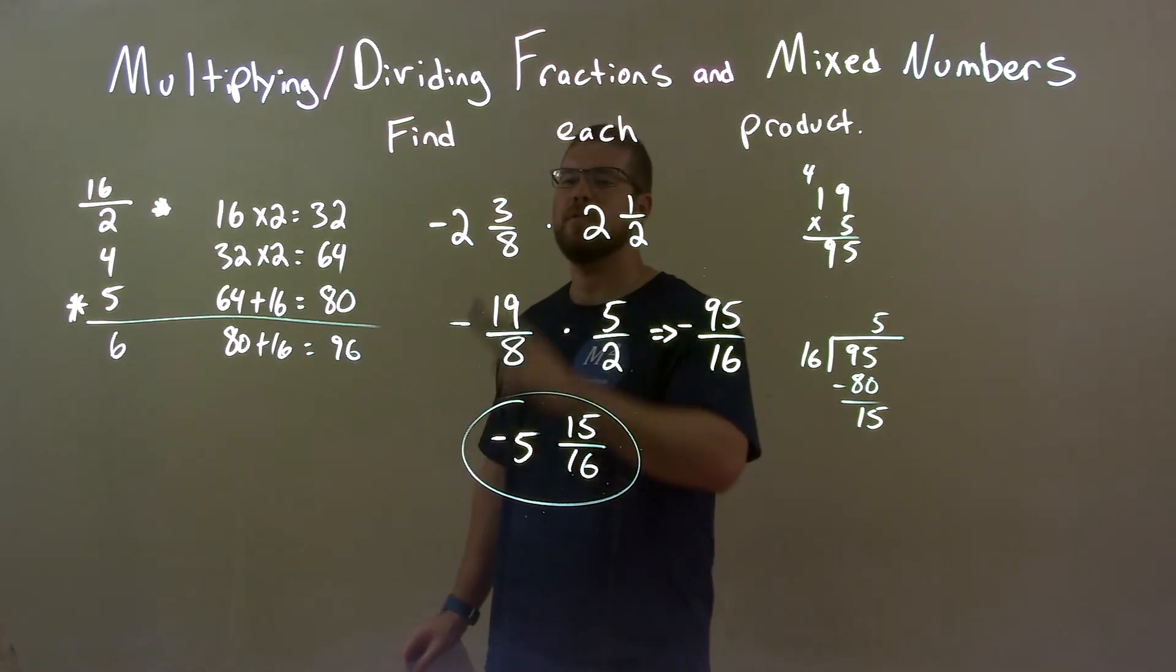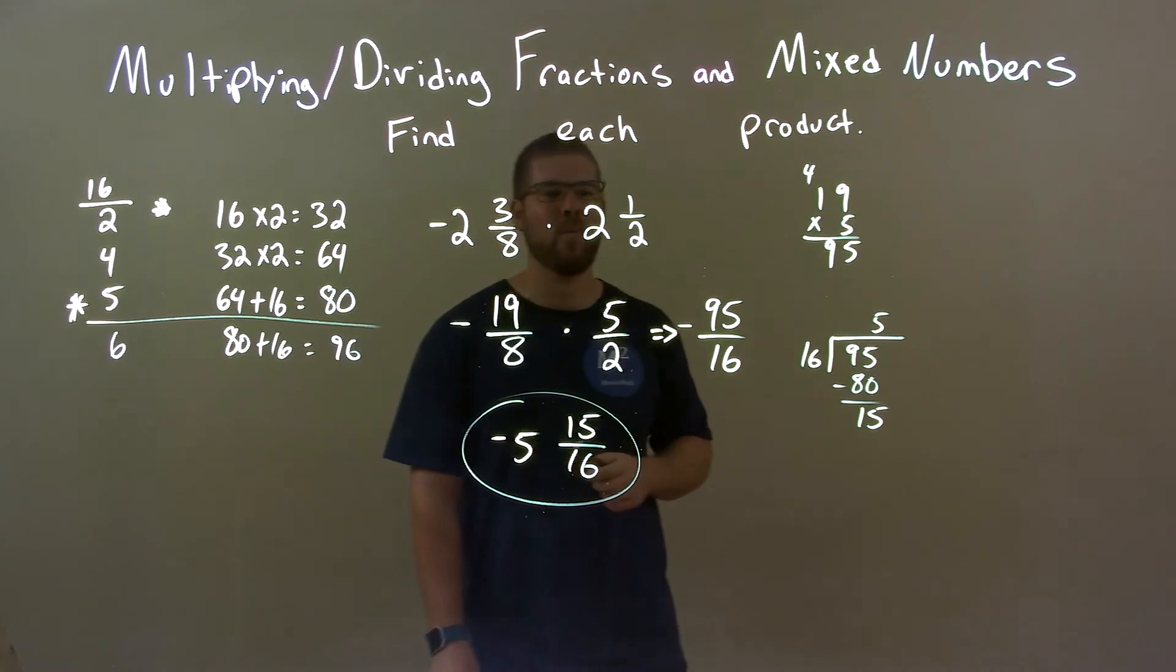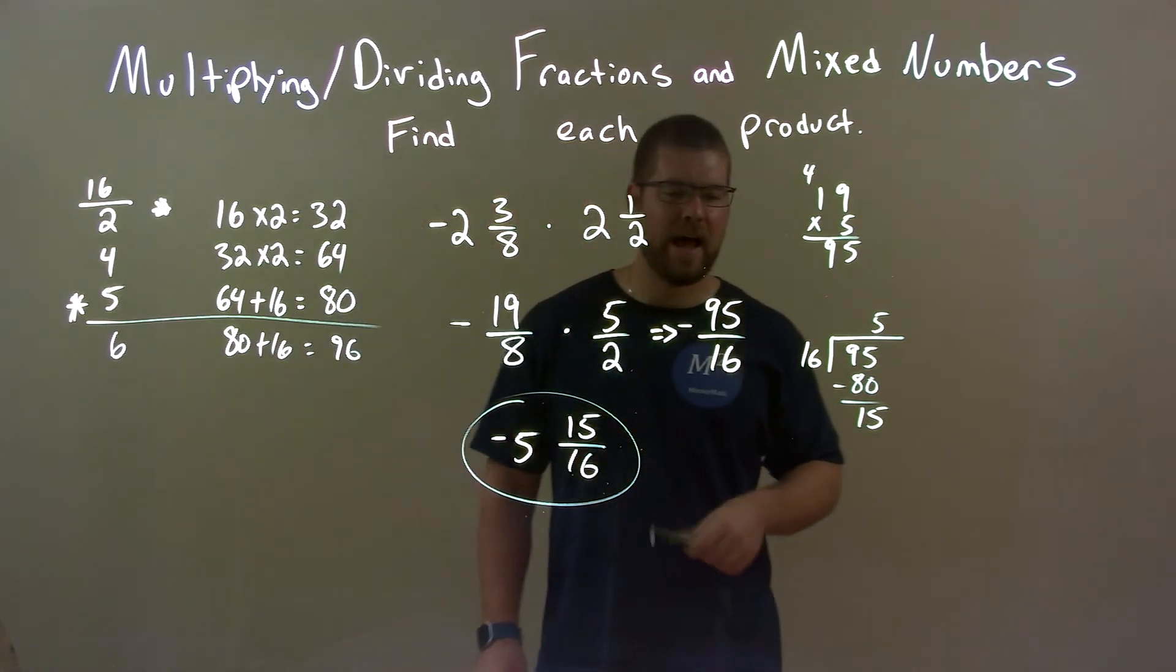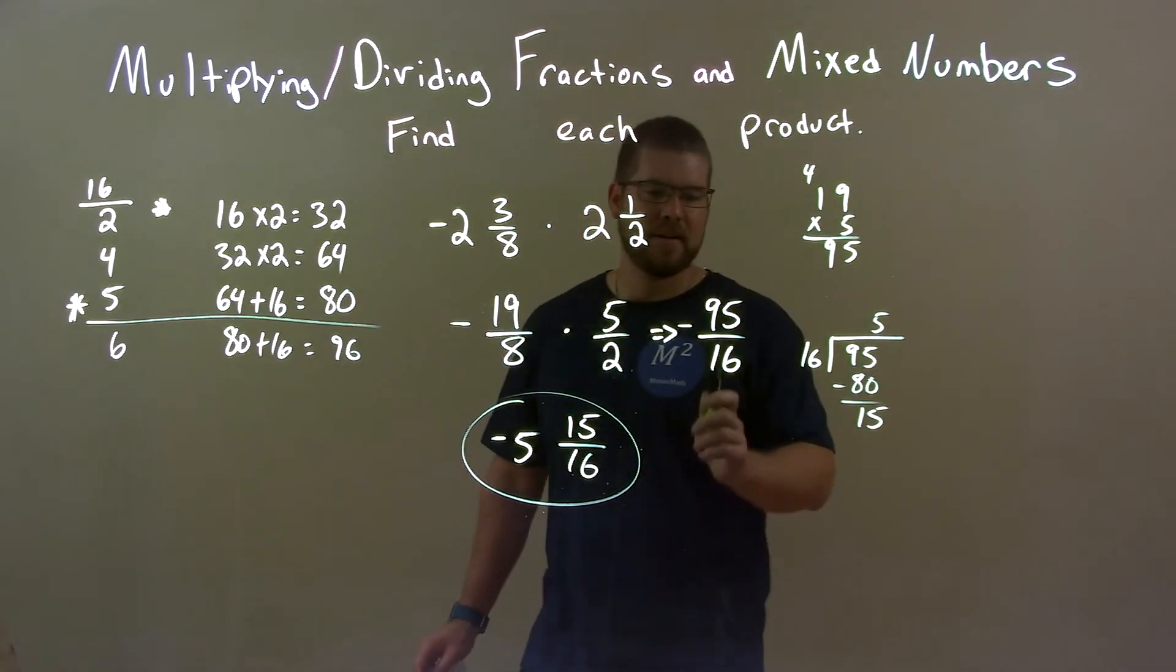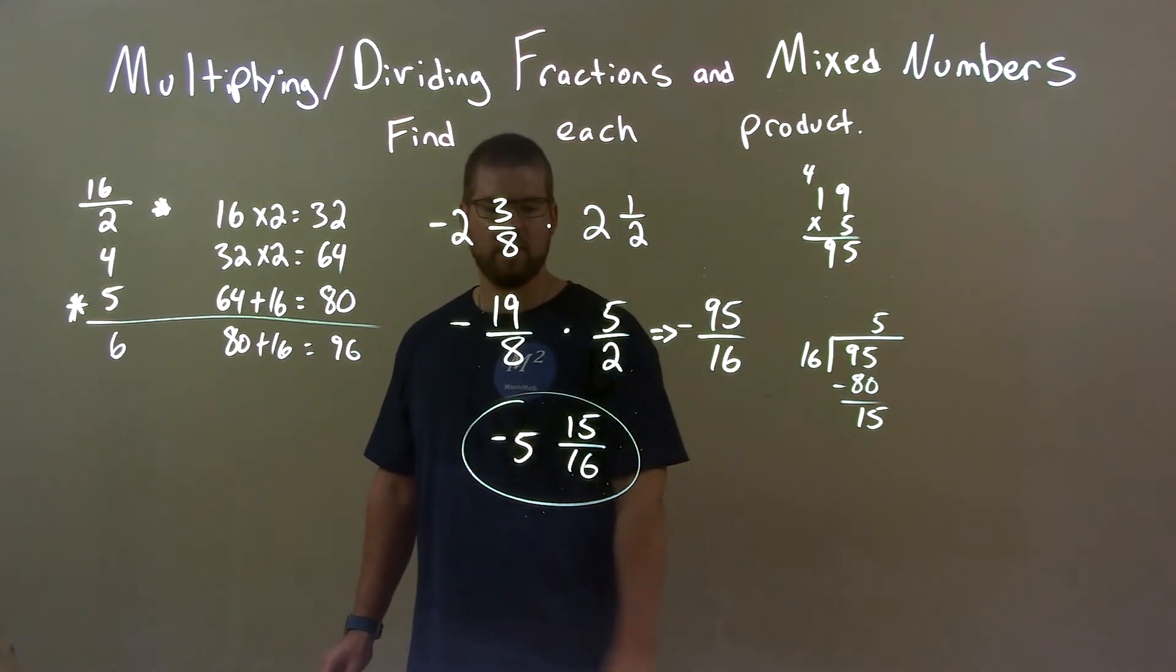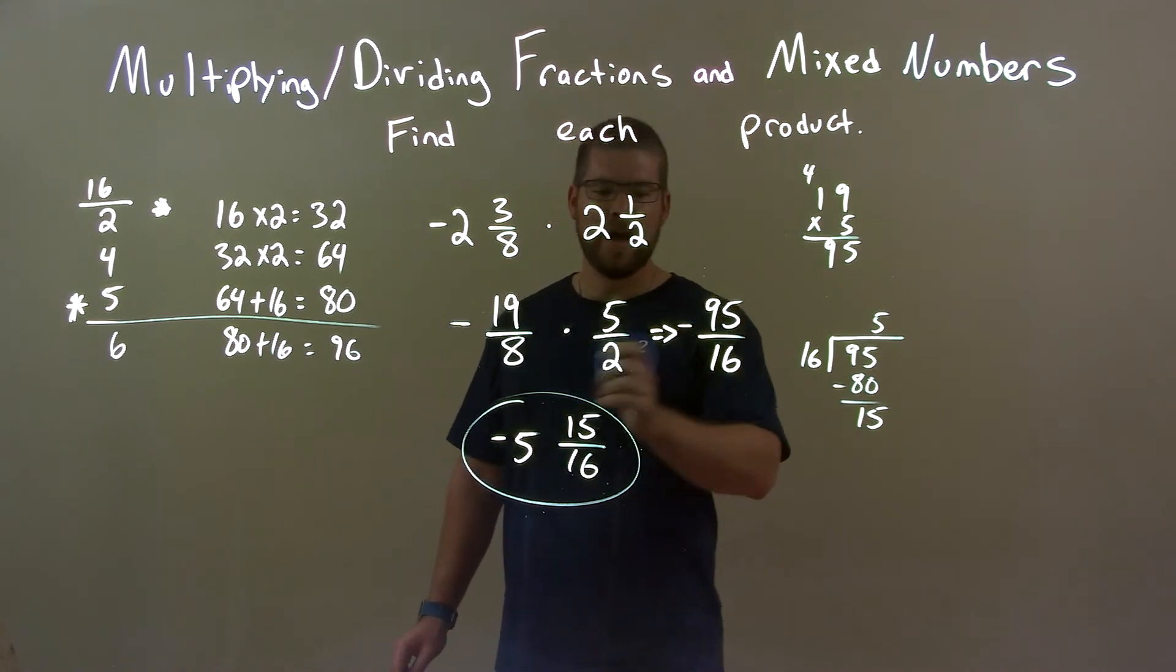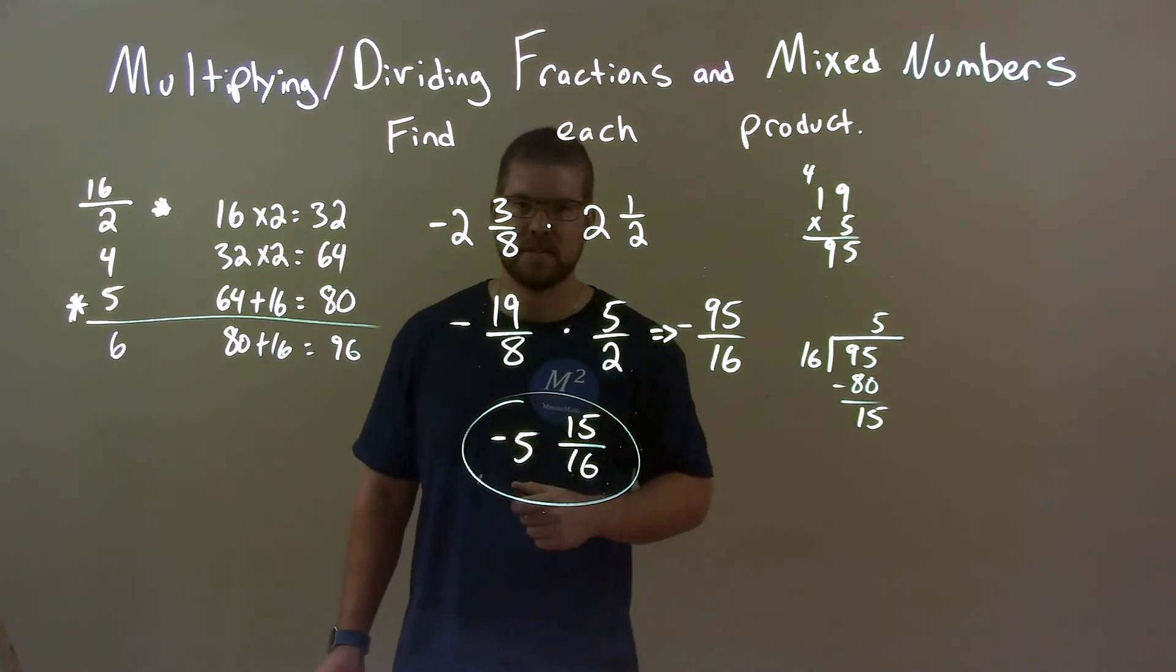Quick recap. We're given negative two and three eighths times two and one half. Made them both improper fractions and multiplied out. Then figured out, kind of my little way of doing it, how many times 16 goes into 95. Well, 16 goes into 95 five times with 15 left over. So there's the five. There's the 15. There's the 16 in the denominator. Had to keep it negative. So again, final answer, negative five and 15 over 16.